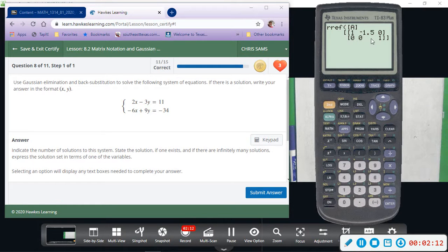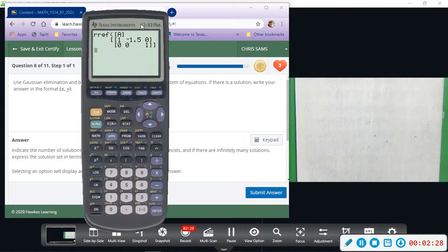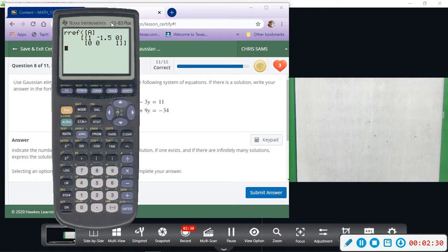It looks like this is going to be no solution. Normally I think if you see all zeros that means infinitely many solutions, but this is what the calculator is giving us. Let me write it down so you can see what's going on.